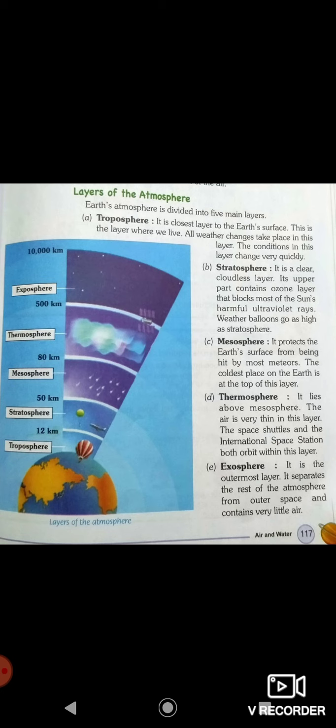And last is exosphere. Exosphere is the outer layer. It separates the rest of the atmosphere from outer space and contains very little air. Here is a very small layer, and it separates the atmosphere. The exosphere is the last layer. After that, the outer space will start.